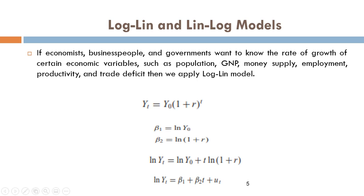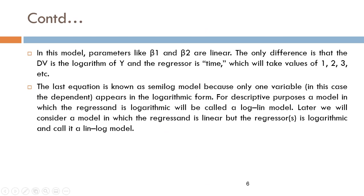If I combine here, my dependent variable has the natural log, but β1 and my independent variable—which is time—do not have natural log. So in this model, parameters β1 and β2 are linear. The only difference is that the DV is the logarithm of Y, and the regressor is time, which may be 1, 2, 3, or years, months, etc.